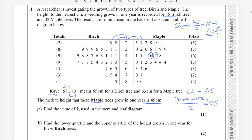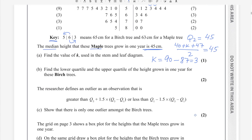Taking the average of (40 + k) and 47, dividing by 2, equals 45. Multiplying both sides by 2 gives 90. So 90 = 40 + k + 47 = 87 + k, therefore k = 3. Part one is done.